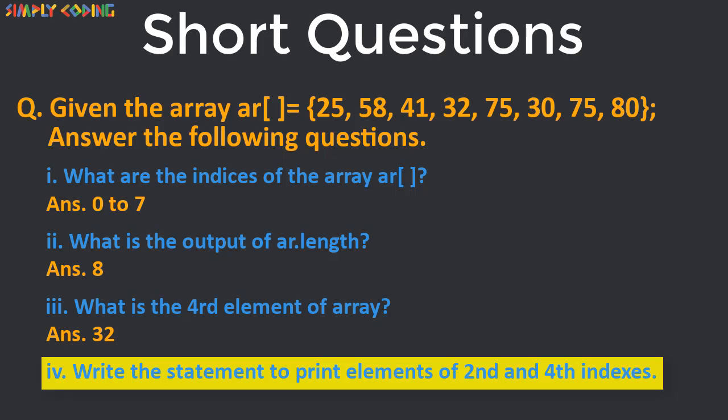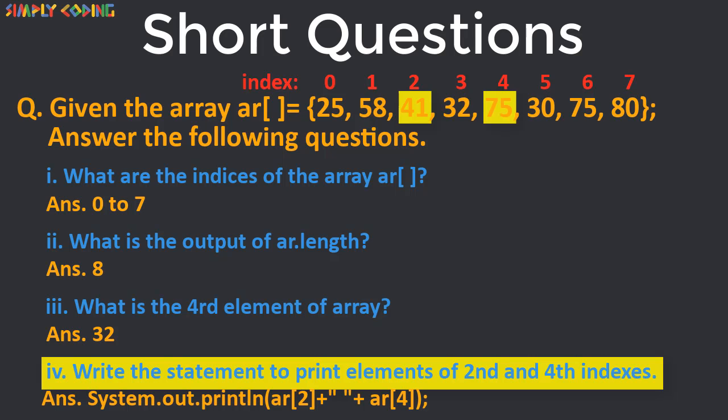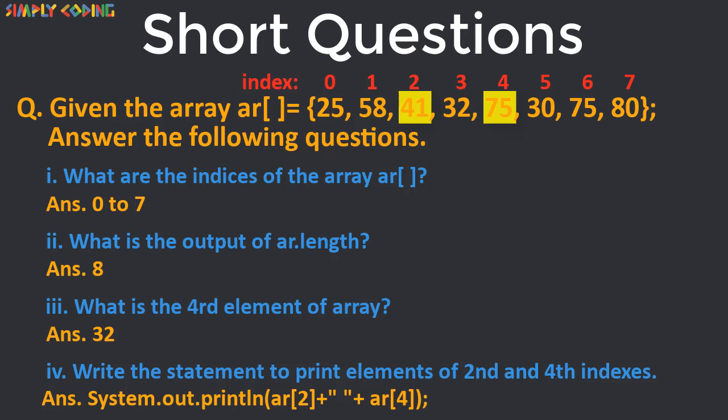If you see the next question here they are asking for element at 2nd and 4th index. So we will write our print statement with ARR2 and ARR6 which will give us 41 and 75 respectively.